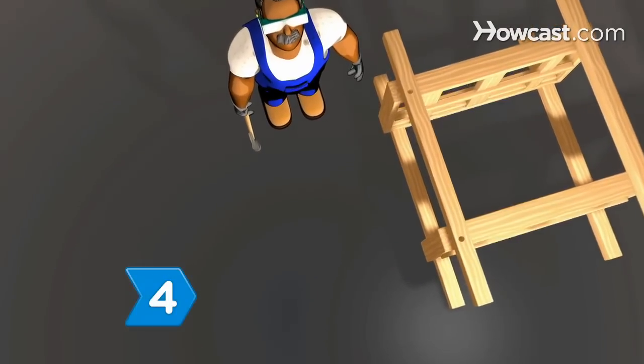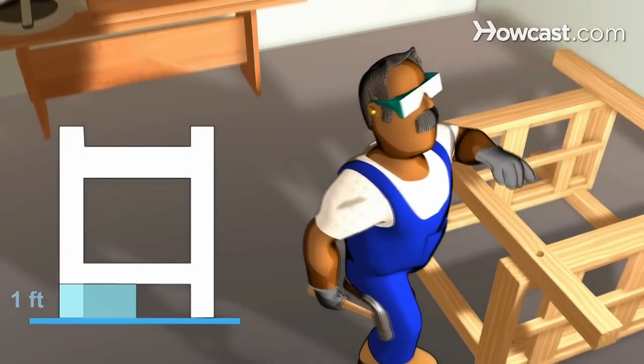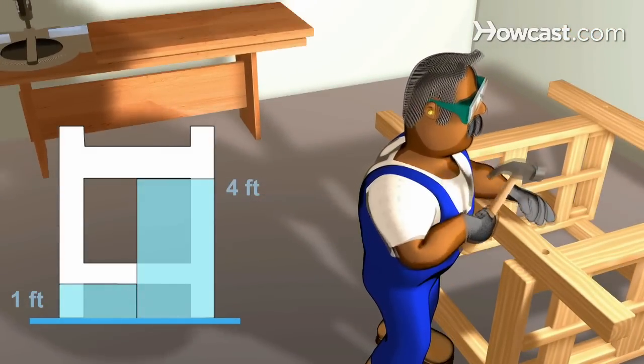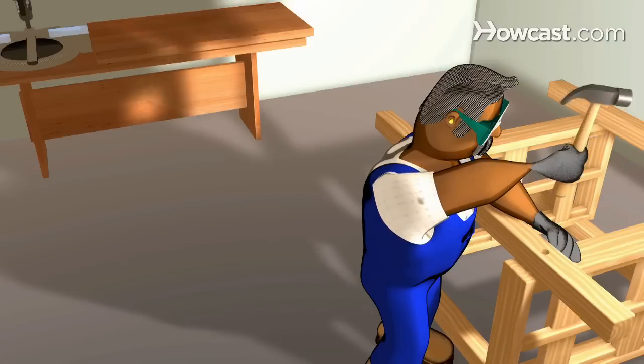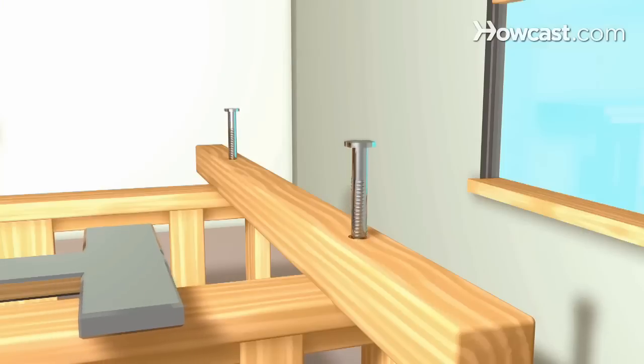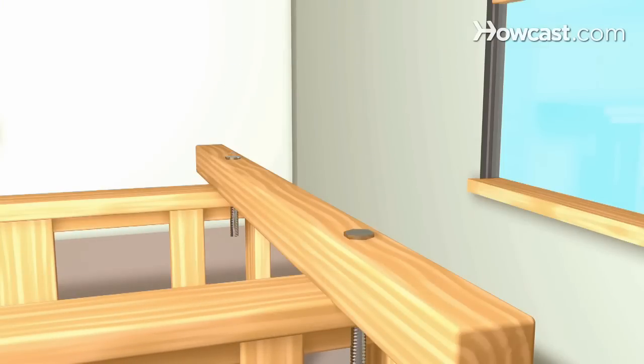Step 4. Measure and mark where you want each corner to join the posts. The lower bunk should be at least 1 foot above floor level and the upper one should be 4 feet above floor level. Position the posts at each corner and attach the frames to the posts with No. 10 finishing nails. Then check to make sure it's square before attaching with carriage bolts.